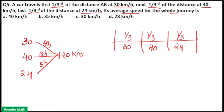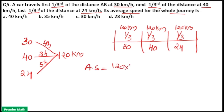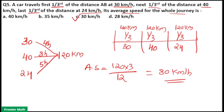Total time is 4 + 3 + 5 = 12 hours. Total distance is 120 + 120 + 120 = 360 km. So average speed = 360 ÷ 12 = 30 km per hour. So option C is your answer.